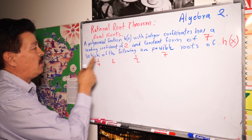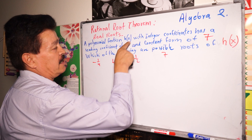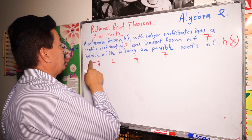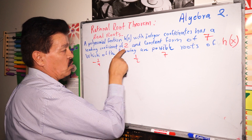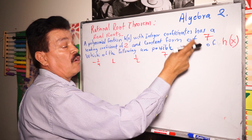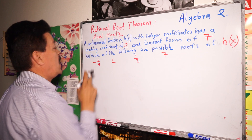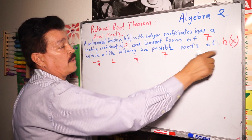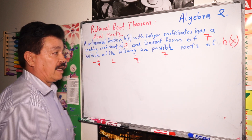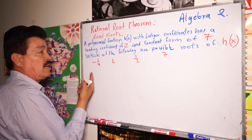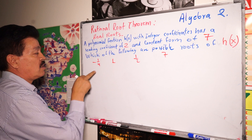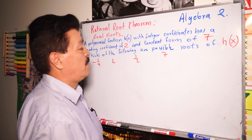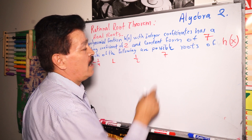It says: a polynomial function h(x) with integer coefficients has a leading coefficient of 2 and a constant term of 7. Which of the four choices are possible roots of h(x)? The options are: negative 1/4, 1, 1/2, and 7.